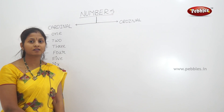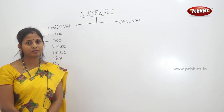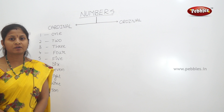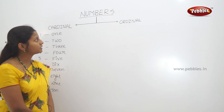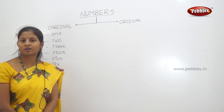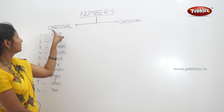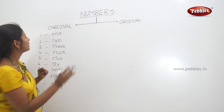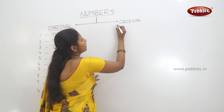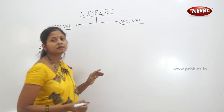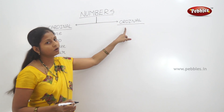We will learn a lot about numbers. Numbers are 1, 2, 3, etc. We have two types of numbers. First, numbers are cardinal numbers. The second type is ordinal numbers.